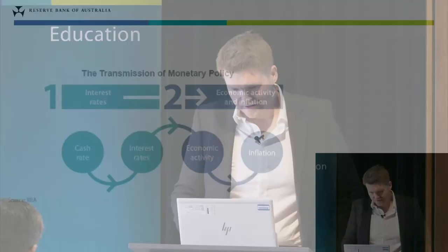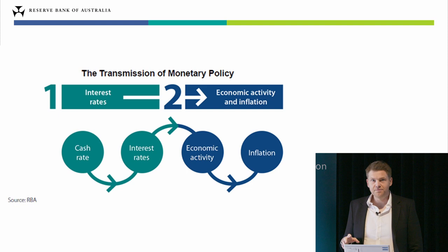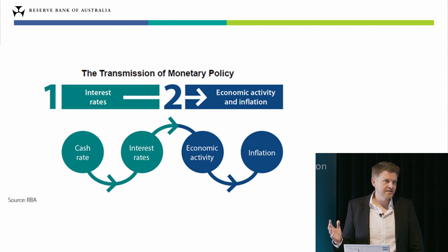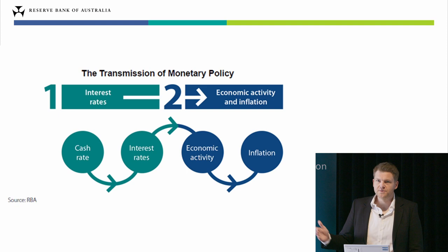This picture here gives you a really simple overview of the policy transmission mechanism. It's a picture from an RBA bulletin article that a couple of my colleagues wrote back in 2017, and it's a really excellent resource if you're wanting more information on the transmission mechanism. What this picture does is trace out the sequence of steps that happens following an increase in the cash rate.